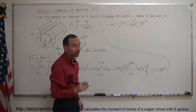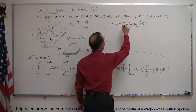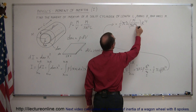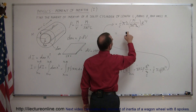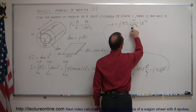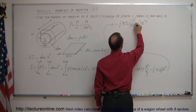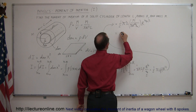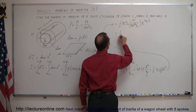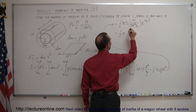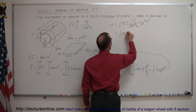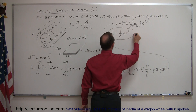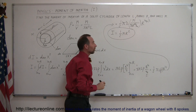Now we can simplify. Pi cancels, L cancels, and R squared cancels with two of the factors of R to the fourth. What remains is one half times M times R squared. That is the moment of inertia of a solid cylinder.